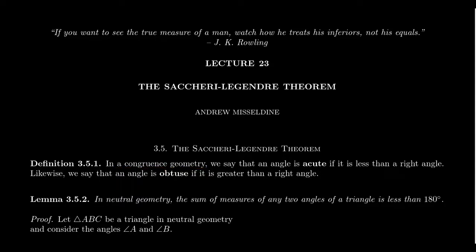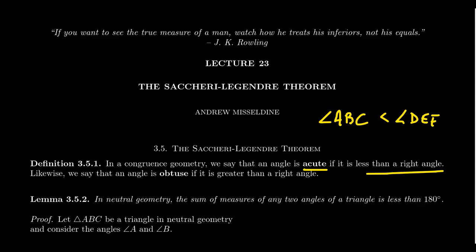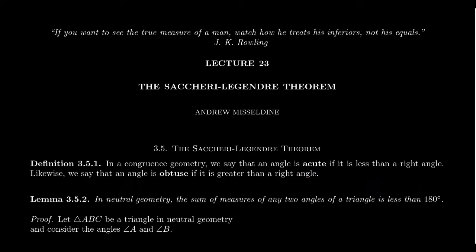We say that an angle is acute if it is less than a right angle. We know what it means for an angle to be less than another angle — for example, angle ABC is less than angle DEF. We also know that all right angles are congruent to each other; we proved Euclid's fourth postulate as a theorem of congruence geometry. Likewise, we say that an angle is obtuse if it is greater than a right angle.